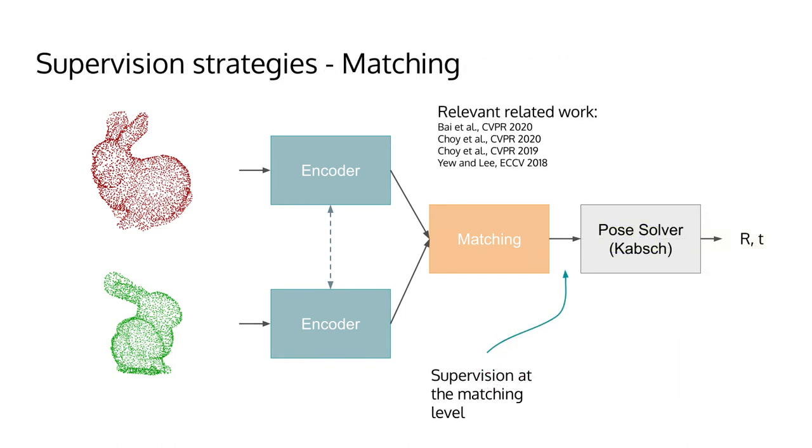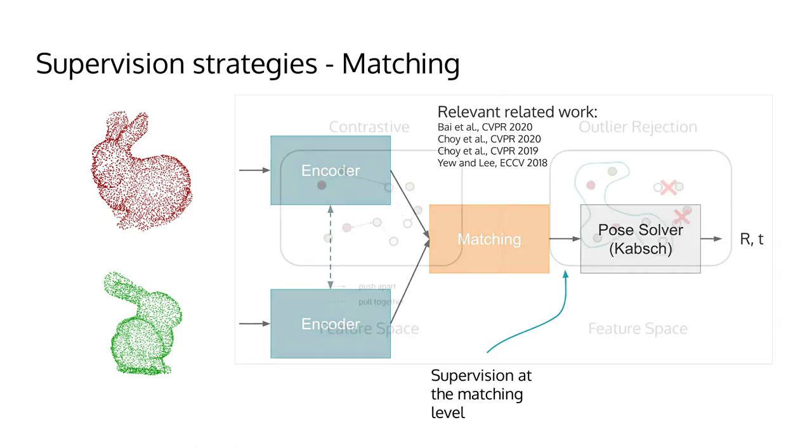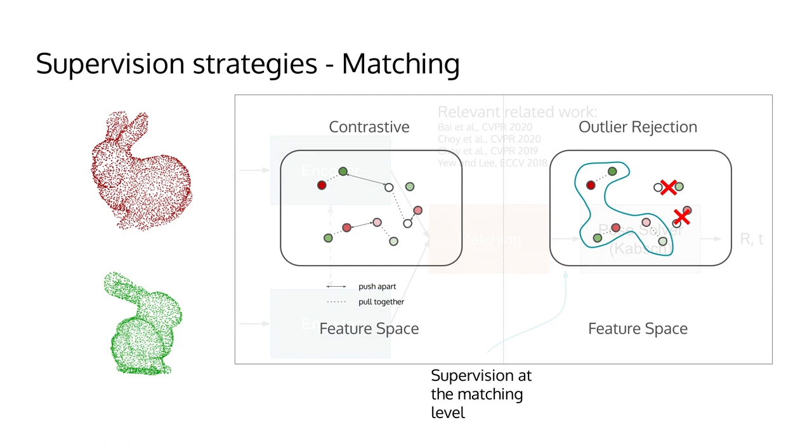Having introduced the general design of correspondence-based methods, it is important to address how these are usually supervised in the deep learning domain. Because better matching quality directly translates into better poses, the most conventional form of supervision is done at the matching level. This usually manifests itself in two ways.